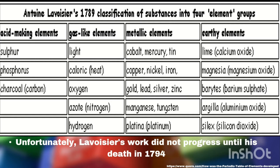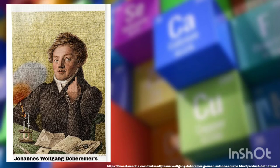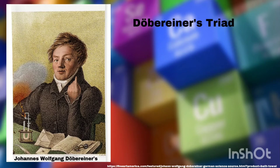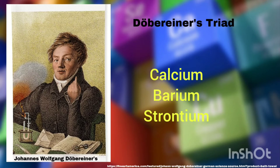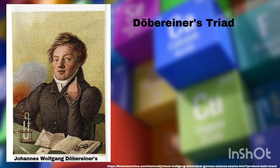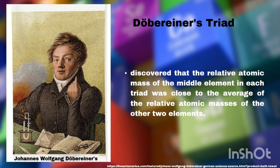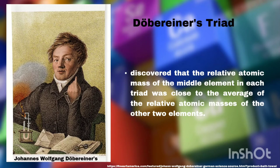In 1817, Johann Wolfgang Döbereiner, a German chemist, studied three elements and noticed similarities among the properties of metals such as calcium, barium, and strontium. He continued to study another group of three elements and called these groups triads. He noted similarities in the three elements chlorine, bromine, and iodine. Döbereiner predicted that there is a closeness among the atomic masses — traditionally called atomic weight — of the said elements.